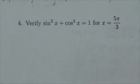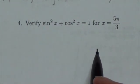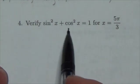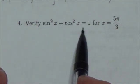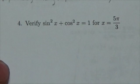Hi everybody, this is the Math 30-1 Trig 2 review. This is question 4. What we're supposed to do here is verify that sine squared plus cosine squared is equal to 1 when x is equal to 5π over 3.